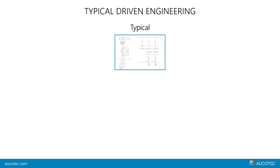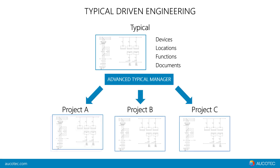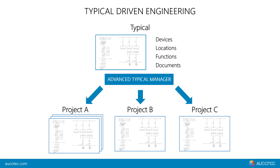In Engineering Base, or EB, we have different aspects of the EN 81346 as individual objects. If a typical is copied with the Typical Manager, it will take care of all these aspects plus all needed documents. Once a typical is created, it can be used over and over again in different projects or even databases, so the invested know-how and work can be reused by nearly everyone, anytime.